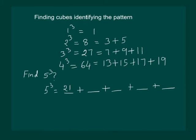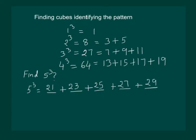Next is 23, next odd number is 25, next odd number is 27, and next one is 29. If we add these, the answer will come out to be 125.